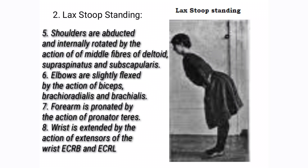The elbows are flexed by the action of biceps, brachioradialis and brachialis. The forearms are pronated by the action of pronator teres. The wrists are extended by the action of extensors of the wrist — ECRB and ECRL.